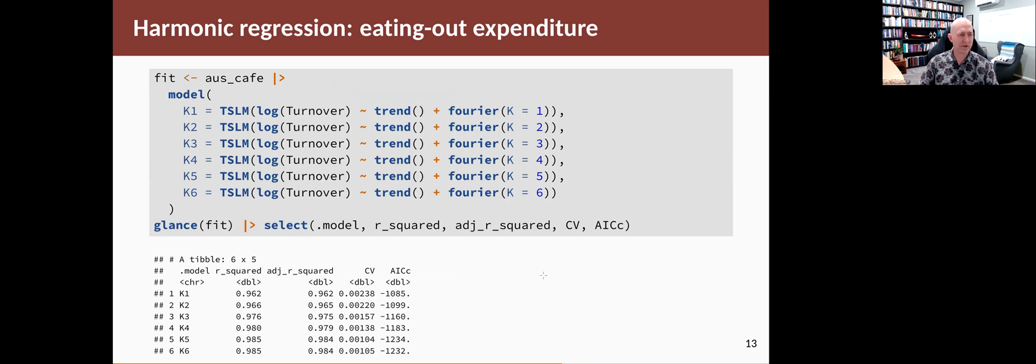So here's what we fitted. Last time we fitted these six models using increasing number of Fourier terms. And what we're going to do is then use the glance function to compute various summary statistics. So we've got the R², adjusted R², the CV statistic, and the AICc statistic.